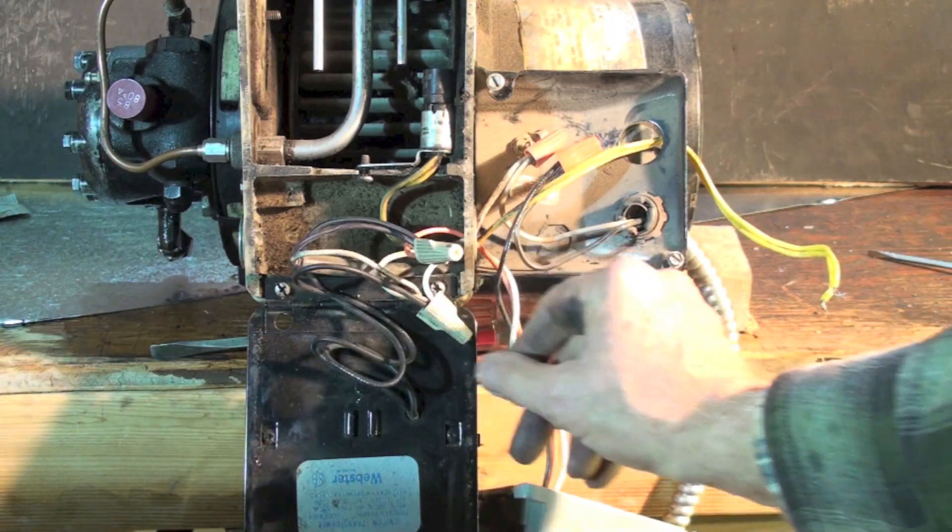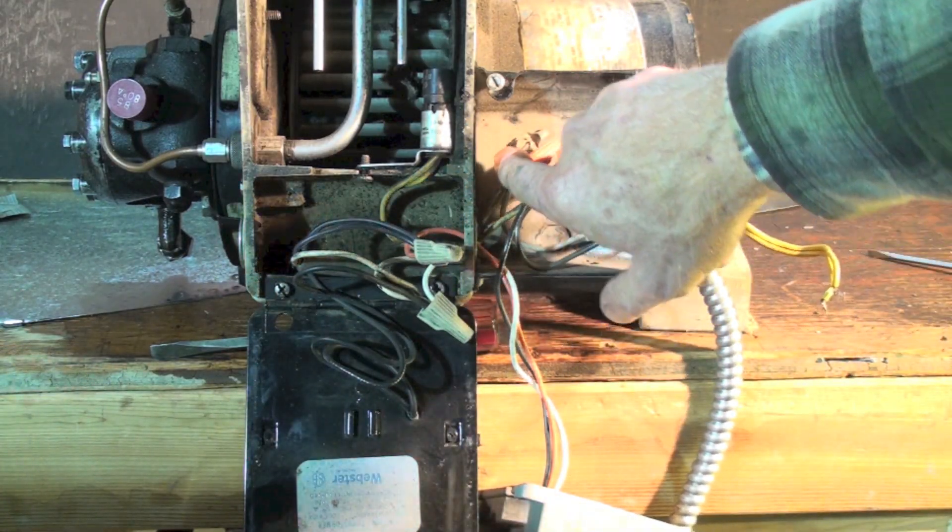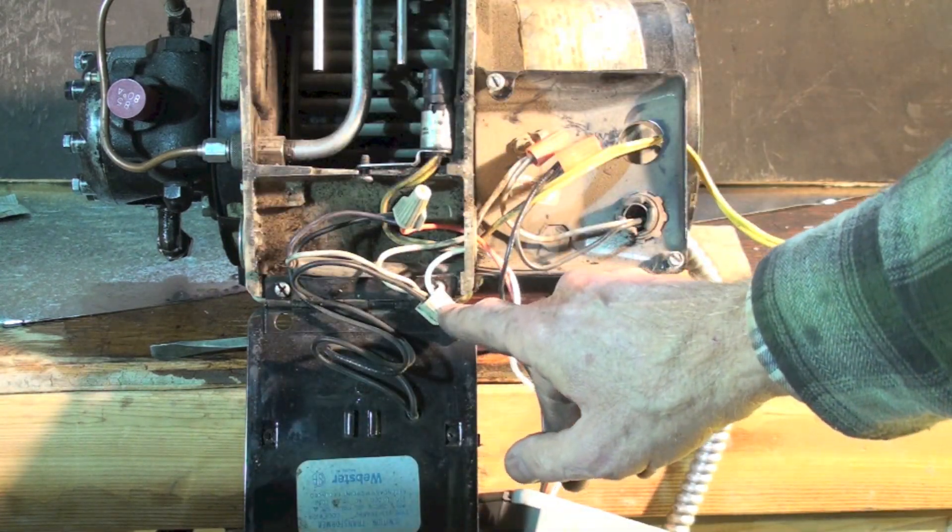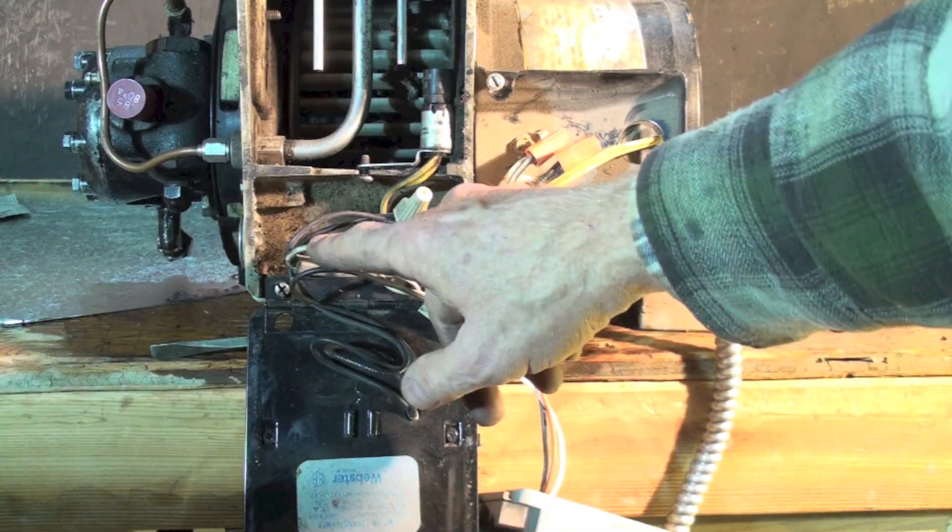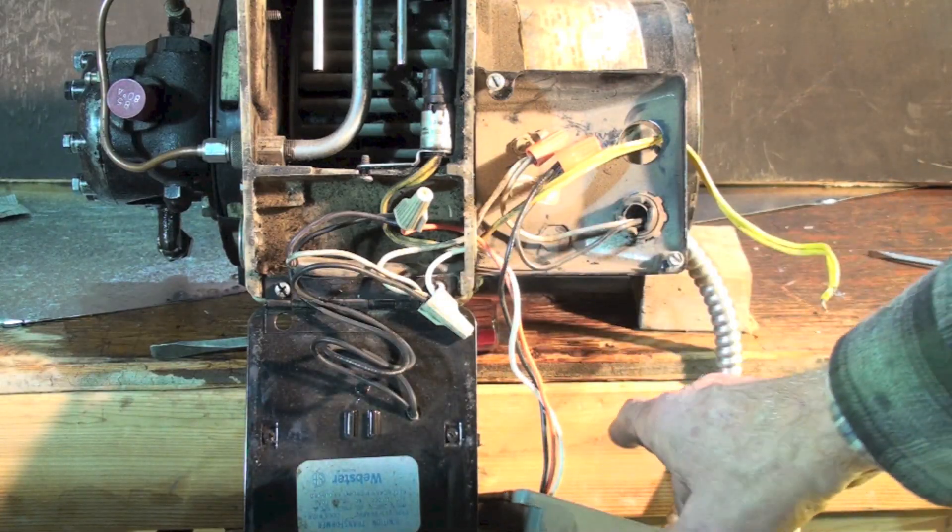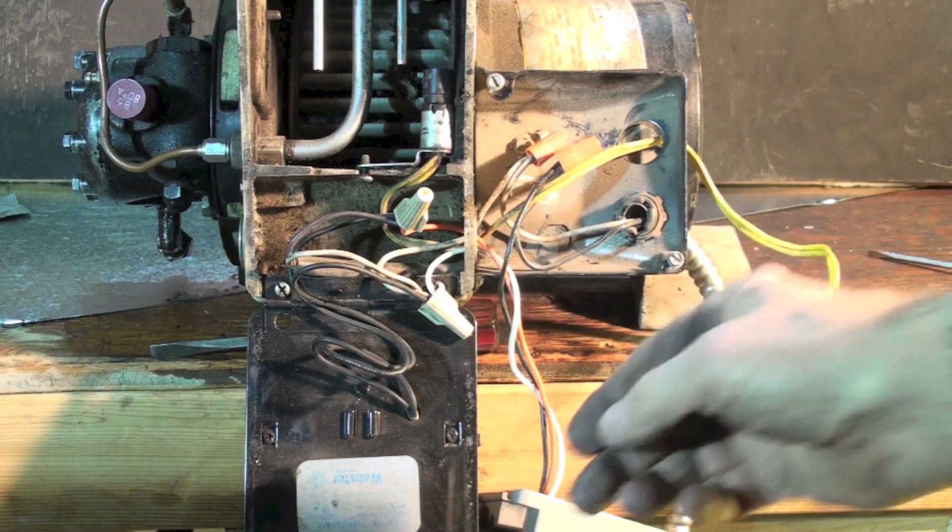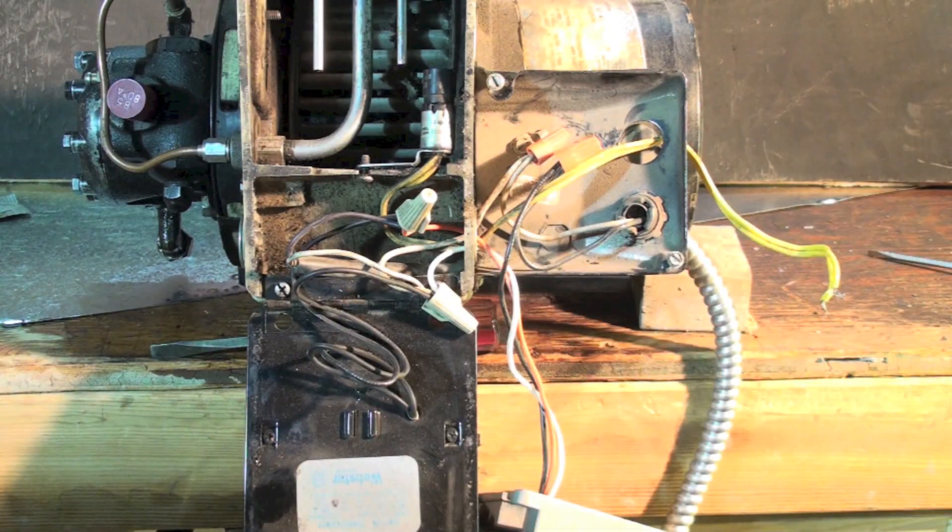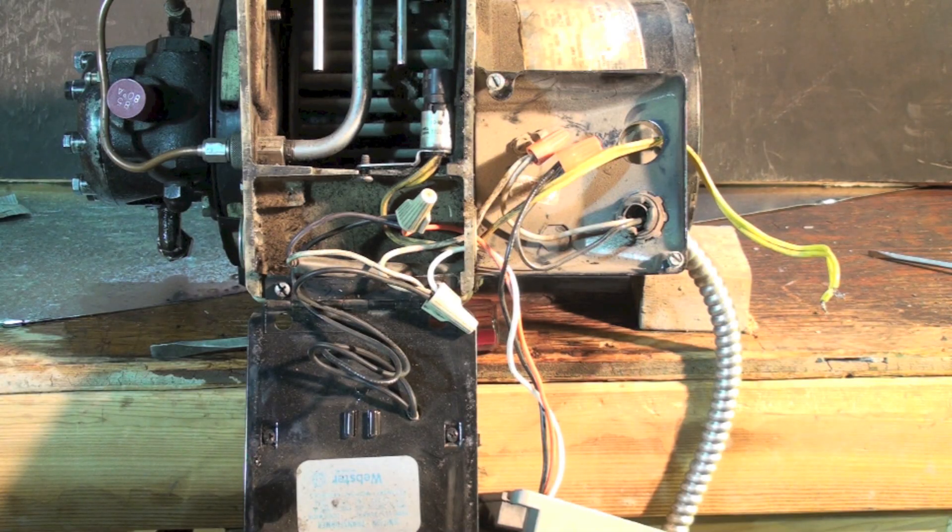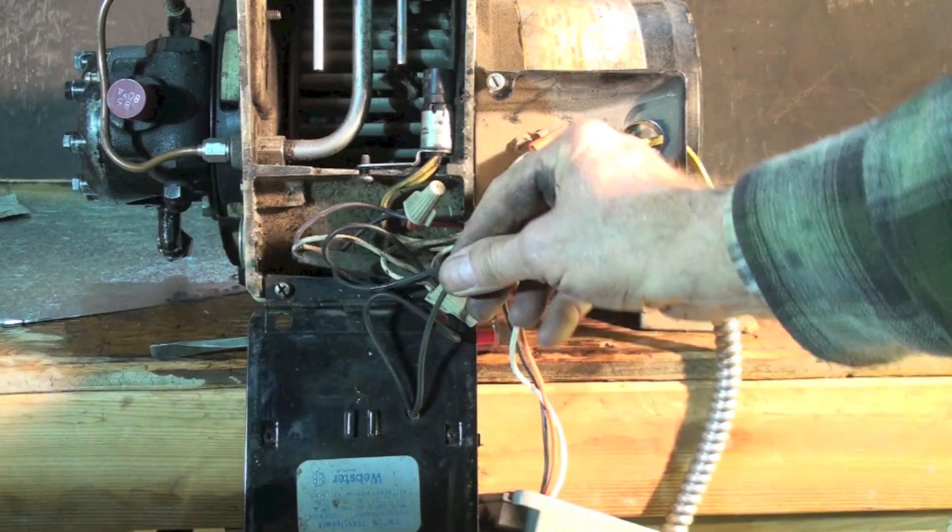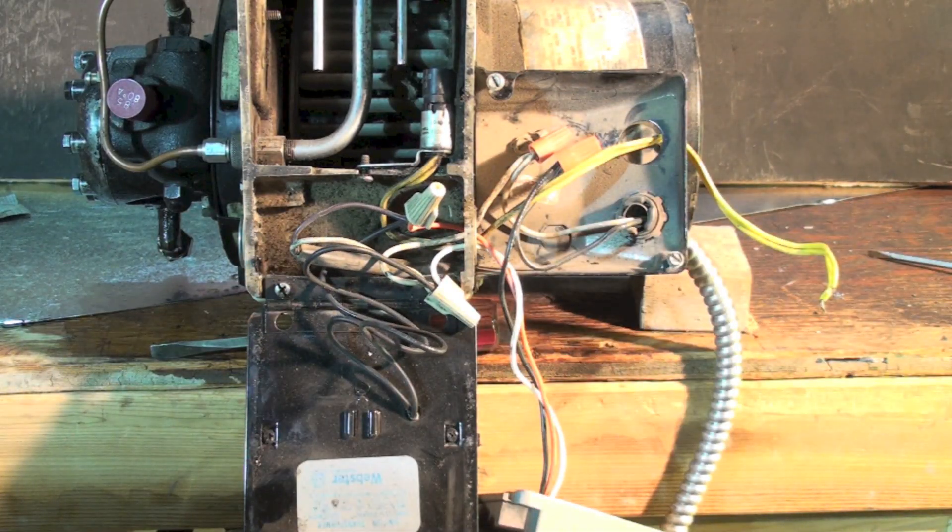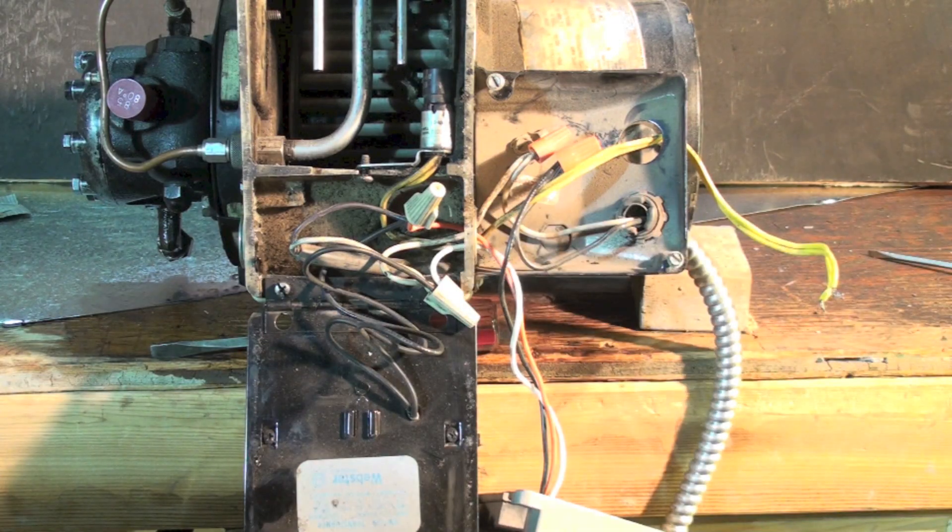So we have the white wire coming from the power source goes to a wire nut in here. One goes to the motor, one goes to the cad cell relay. The only odd man out here is the transformer, because both wires going to the transformer are black. Doesn't make any difference which one you use. Just hook up one of the black wires from the transformer to that white wire nut.